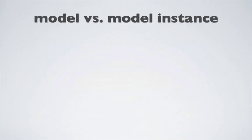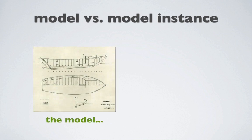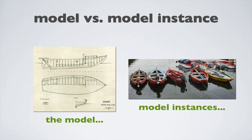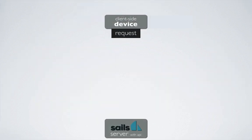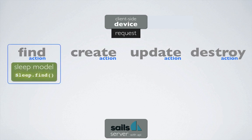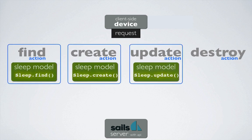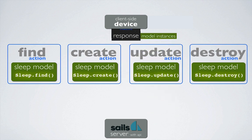So what is the model versus model instances? Think of the model as the instructions for building something, whereas an instance of that model is one of the things that you've built. Depending upon the request, our action is responsible for finding, creating, updating, or destroying instances of our model. The action then responds to the request with the status of the request along with any model instance or instances associated with the action.